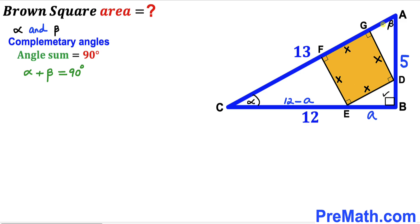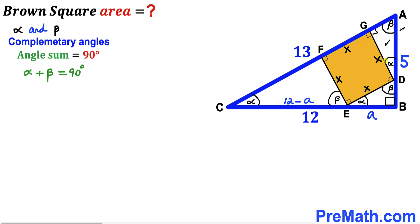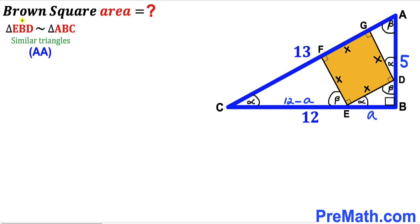In triangle EFC, this angle is alpha, this is 90 degrees, so the remaining angle is beta. In triangle AGD, we have a 90-degree angle and angle beta, so the remaining angle is alpha. We conclude that the small right triangle EBD and the larger right triangle ABC are similar triangles by the angle-angle similarity theorem.